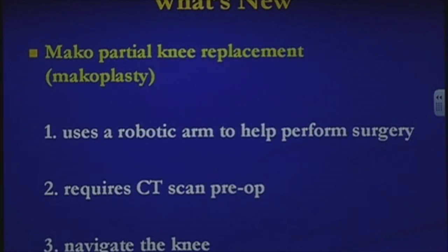Mako arthroplasty is only for partial knees and uses a robotic arm to perform the procedure. You get a CT scan preoperatively, navigate the knee, and use a burr on the robotic arm — it turns on where it's supposed to cut and turns off where it's not. You can see the knee on the monitor with green areas indicating where to cut.